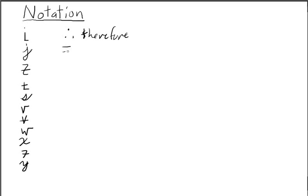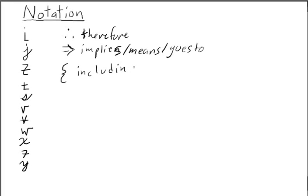I like to use a double barred arrow for implies. Implies means or goes to. I like to use brackets for including. Obviously internet shorthand at means at.